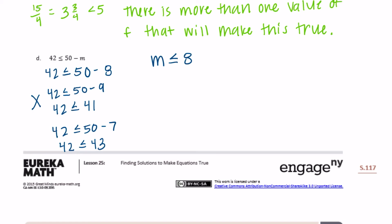And there's going to be more than one correct answer. So it could be 8, 7, 6, 5, 4 and a half, anything less than 8. Less than or equal to 8. There is more than one value of M that will make this true.